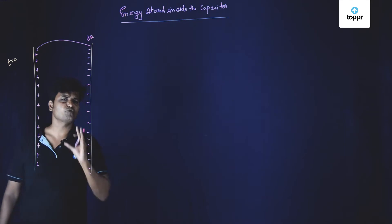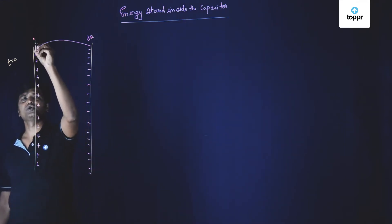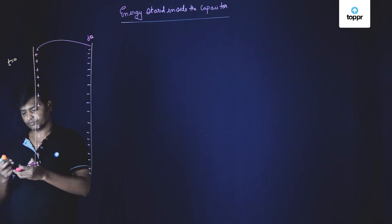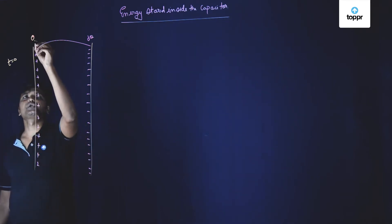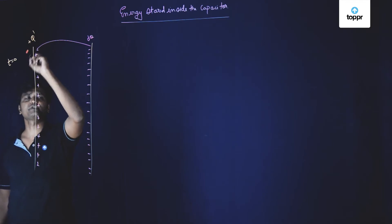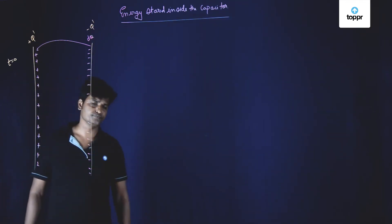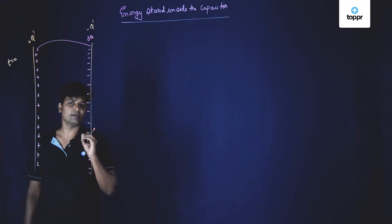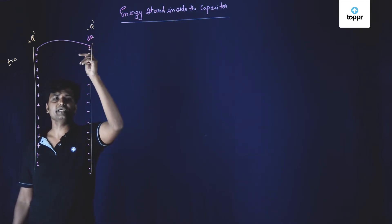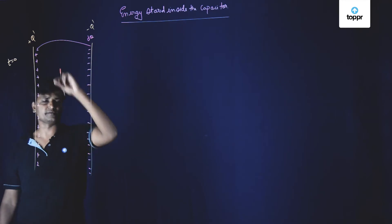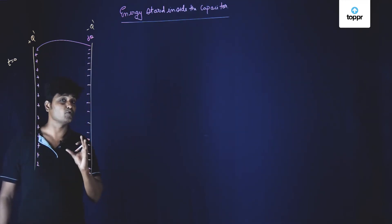After some particular time t, let's say this plate has q' charge — positive q' charge — and this plate has negative q' charge. Now, if I am plucking an additional small charge dq' and depositing it on the positive plate, what would be the small amount of work done?